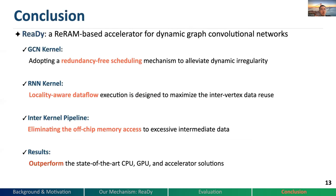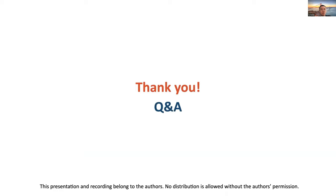In conclusion, we propose RIDI, our first DGCN accelerator with an integrated architecture that allows running the GCN and RNN kernels uniformly on IRAM crossbars. RIDI is designed with three innovations: first, RIDI adopts redundancy-free scheduling to handle dynamic irregularity for GCN kernels; second, RIDI's locality-aware dataflow execution maximizes inter-vertex data reuse for the RNN kernel; finally, RIDI includes an inter-kernel pipeline to maximize overall efficiency by eliminating off-chip memory access to intermediate data. RIDI shows significant outperformance over state-of-the-art CPU, GPU, and accelerator solutions in both performance and energy consumption. That's the whole content of my report. Thank you.